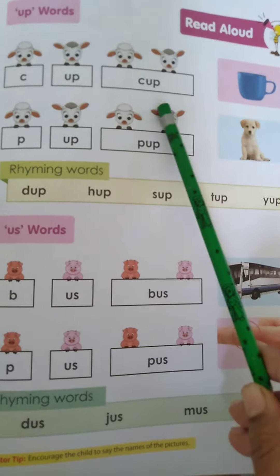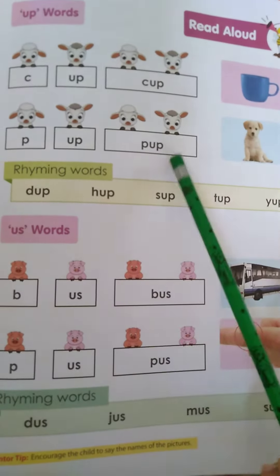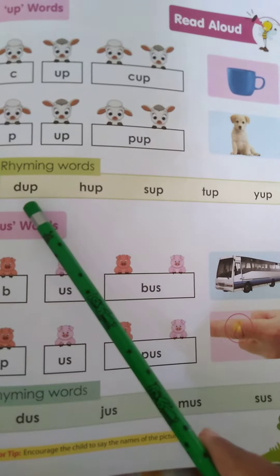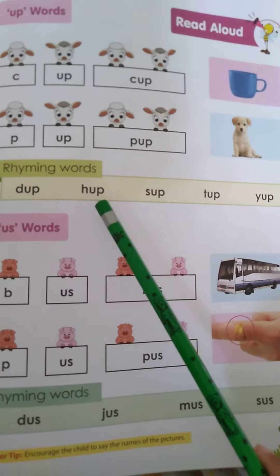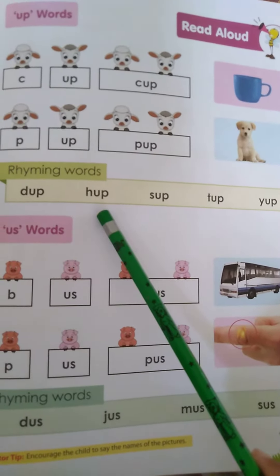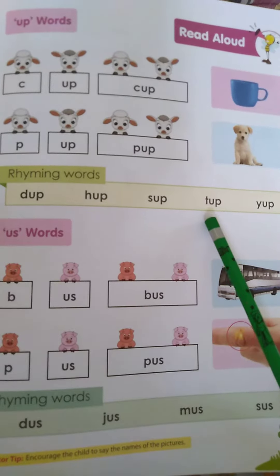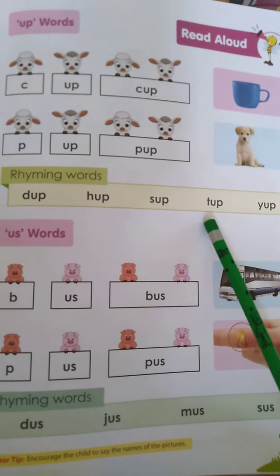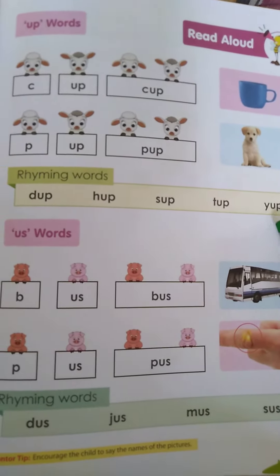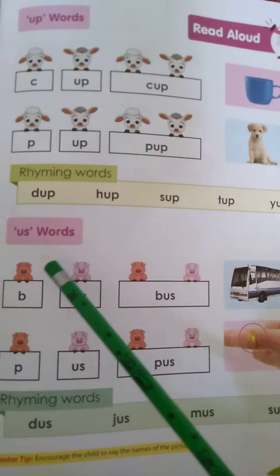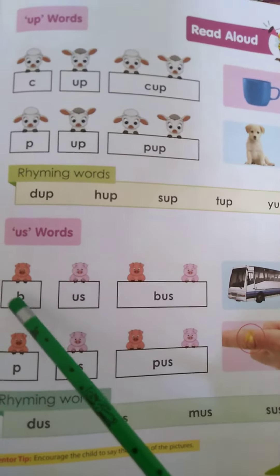K-up: cup. P-up: pup. D-up: dup. H-up: hup. S-up: sup. T-up: tup. Y-up: yup. Now we will read the 'us' words.